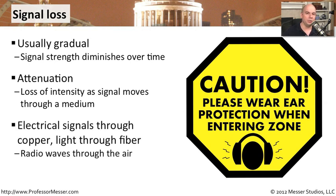Whether you are sending signals through a copper cable, sending light through a fiber, or even using a wireless network where the signal is radio waves, you're going to have signal loss at the other side. The amount of signal loss depends on a number of different criteria. With copper cables, we have to worry about punchdowns and connectors. With fiber, we have long distances and the connectors on the ends and any patches in between. With radio signals, we have to worry about interference and distance from the sending station.